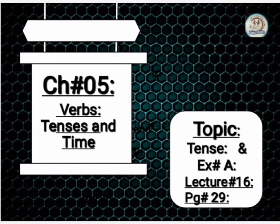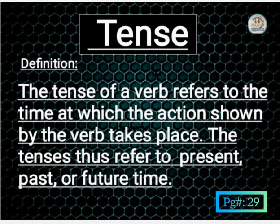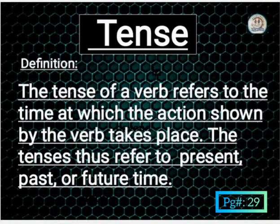Now be attentive for your lecture. Tense کا مطلب ہے فعل زمانہ، یعنی کہ کسی کام کے ہونے کا زمانہ بتانا — کام کب ہوا، ماضی میں ہوا، حال میں ہوا، یا مستقبل میں ہوگا۔ Time ظاہر کرنے کے لئے verb کو use کیا جاتا ہے۔ Verb tense کا اہم حصہ ہے۔